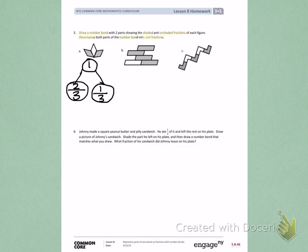Next, it tells me to decompose my number bond into unit fractions. Unit fractions look like one-third, where there is a one as the numerator. Since two-thirds does not have a one as the numerator, I'm going to decompose two-thirds.